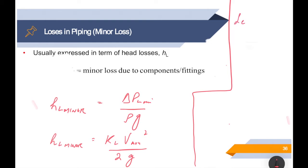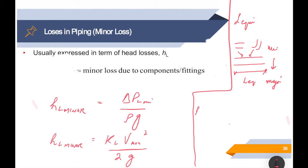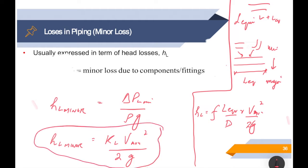There is an additional method — not included in this course — called the equivalent length method. In this approach, fittings such as elbows are converted into an equivalent pipe length L-equivalent, and their losses are expressed as major losses. The formula is HL equals f times L-equivalent divided by d, times V-squared over 2g. Some manufacturers and mechanical engineering services use this method, but we will use the KL expression in our course.